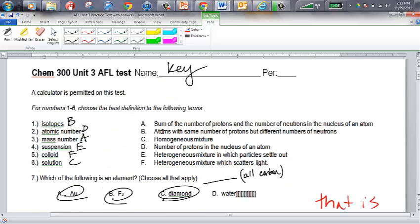Isotopes, of course, are atoms with the same number of protons but different number of neutrons. Atomic number is going to tell you the number of protons. Mass number is the total number of protons plus the number of neutrons. So that's your answer is A.